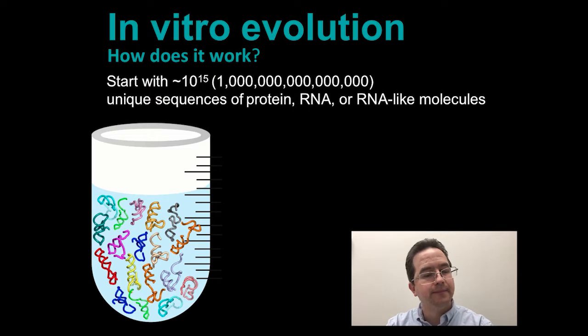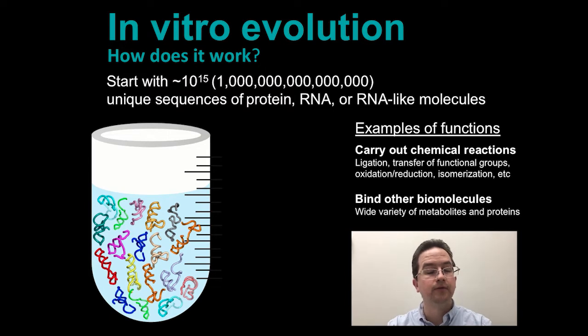The next step is a selection step. This step depends on exactly what task we want to evolve the populations to perform. So, we might decide we want to evolve RNA molecules that carry out a specific chemical reaction, or perhaps we want to evolve proteins that bind a specific small molecule.